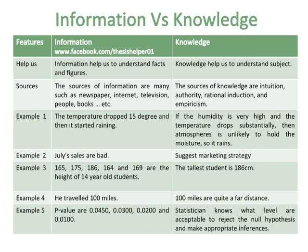Example 2 of information: July's sales are bad. Example 2 of knowledge: suggest a marketing strategy. Example 3 of information: 165, 175, 186, 164 and 169 are the heights of 14-year-old students.